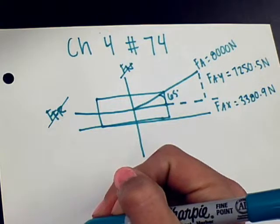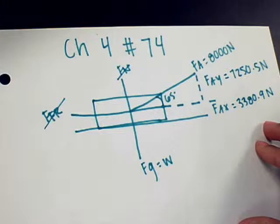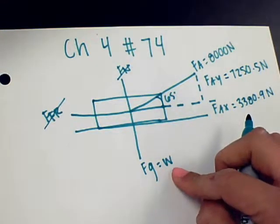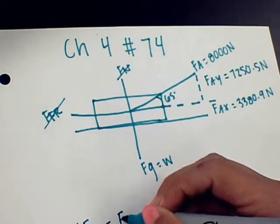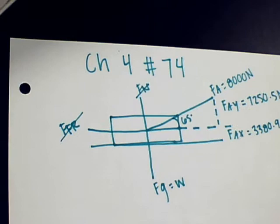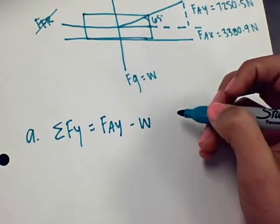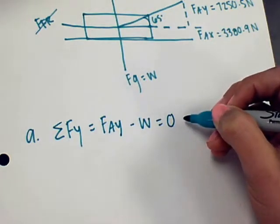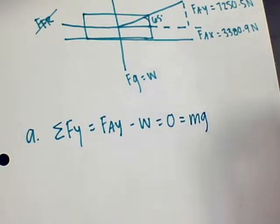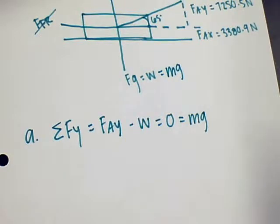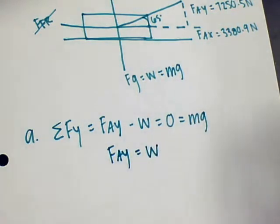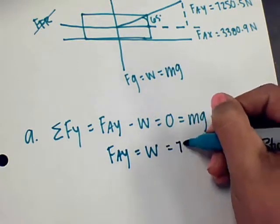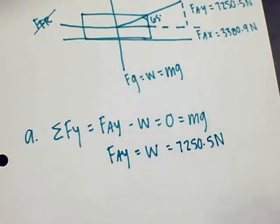So, question A, we are solving for the weight of the plane. We're going to look for all of our forces in the Y direction, since our force of gravity is equal to our weight. The sum of the forces in the Y direction is equal to the applied force in the Y minus our weight. Since there is no acceleration in the Y direction, we can set that equal to 0, which is also equal to mass times gravity, because that's what equals our W. So when you set the problem equal to each other, you get F_AY is equal to the weight. We already solved for F_AY, which was 7,250.5 newtons. So that's A.